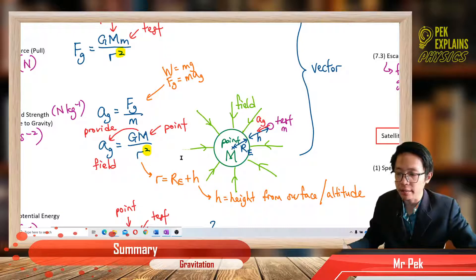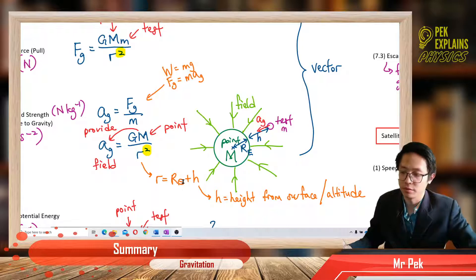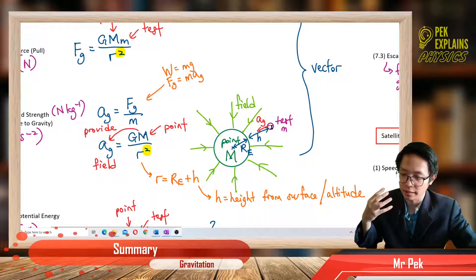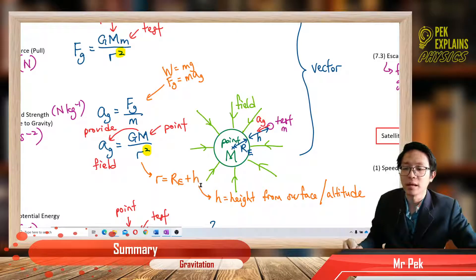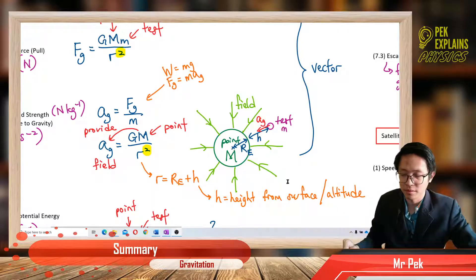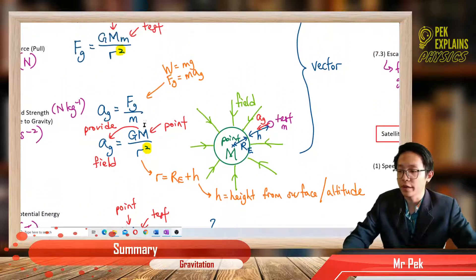How about R? R is the distance from point mass to test mass. It has a radius of earth plus altitude. If the test mass is not in the air — if it is on the surface — then it's just the radius of Earth. But if it is in the air, then don't forget to add the height from the surface, called altitude. So this R is radius of Earth plus altitude — and don't forget you have the square.